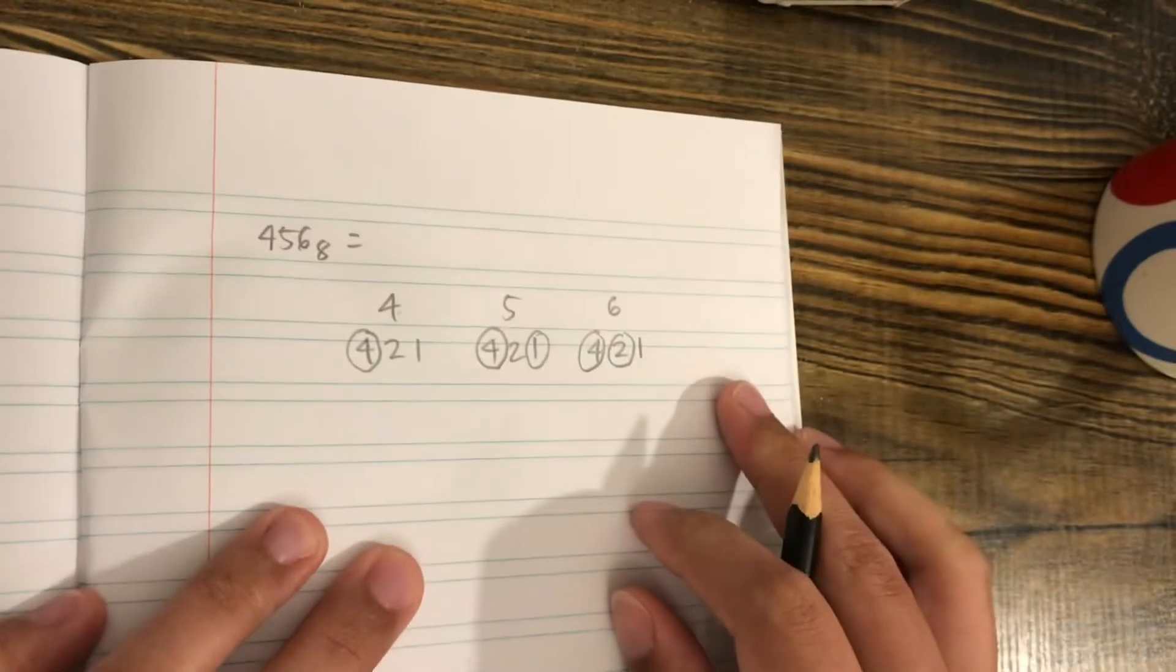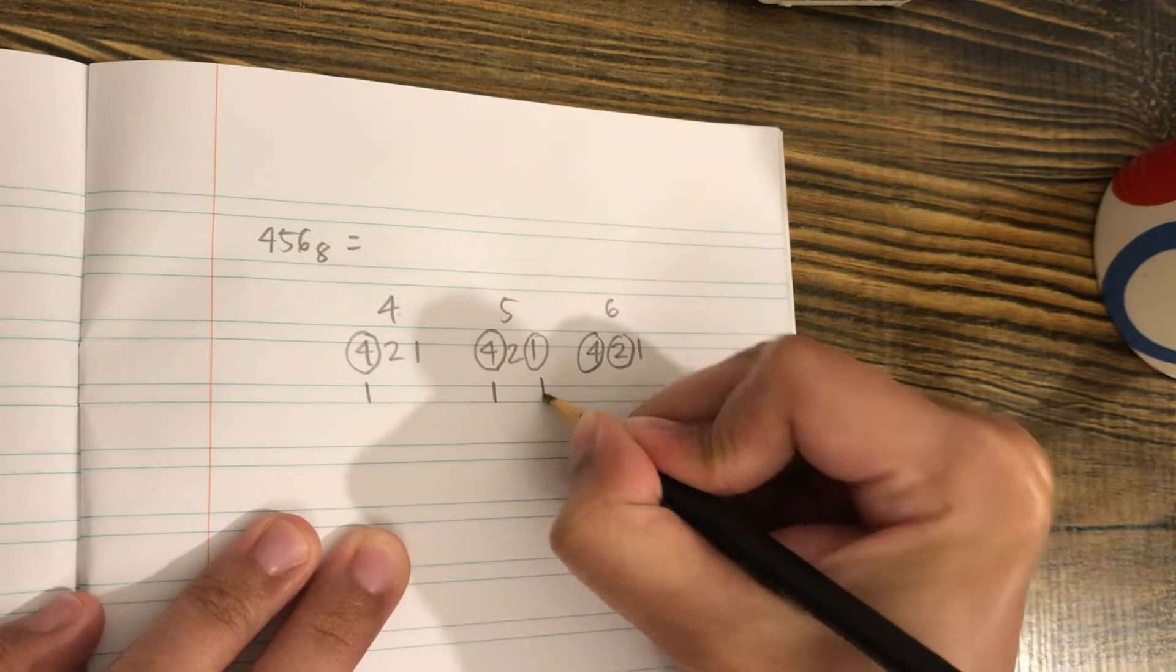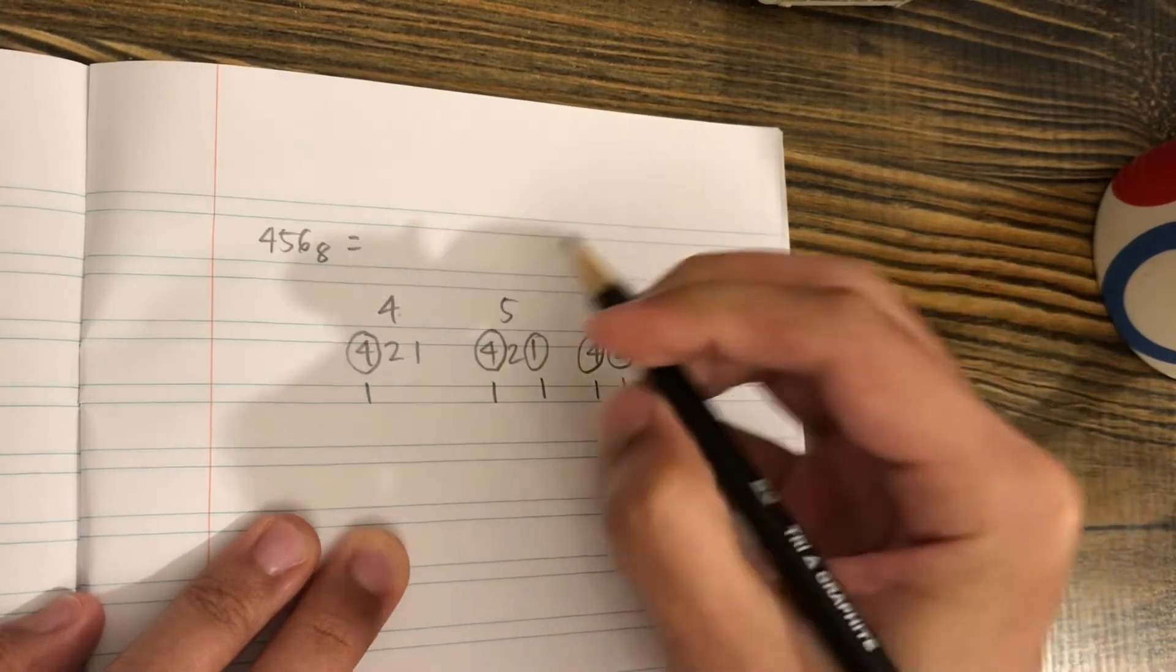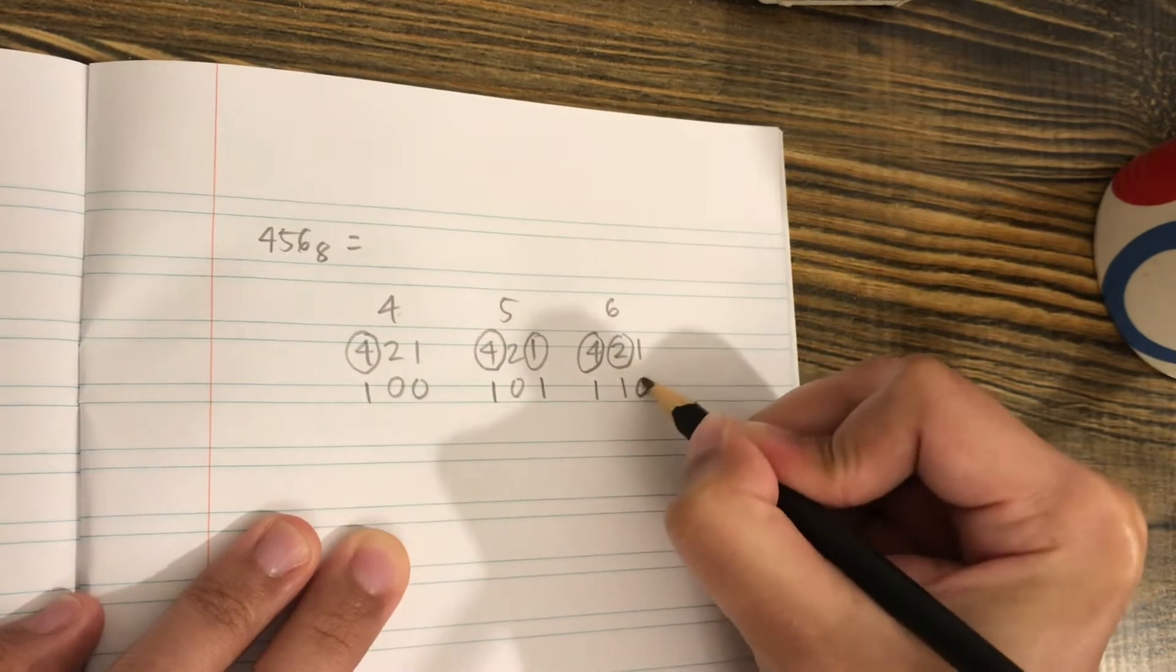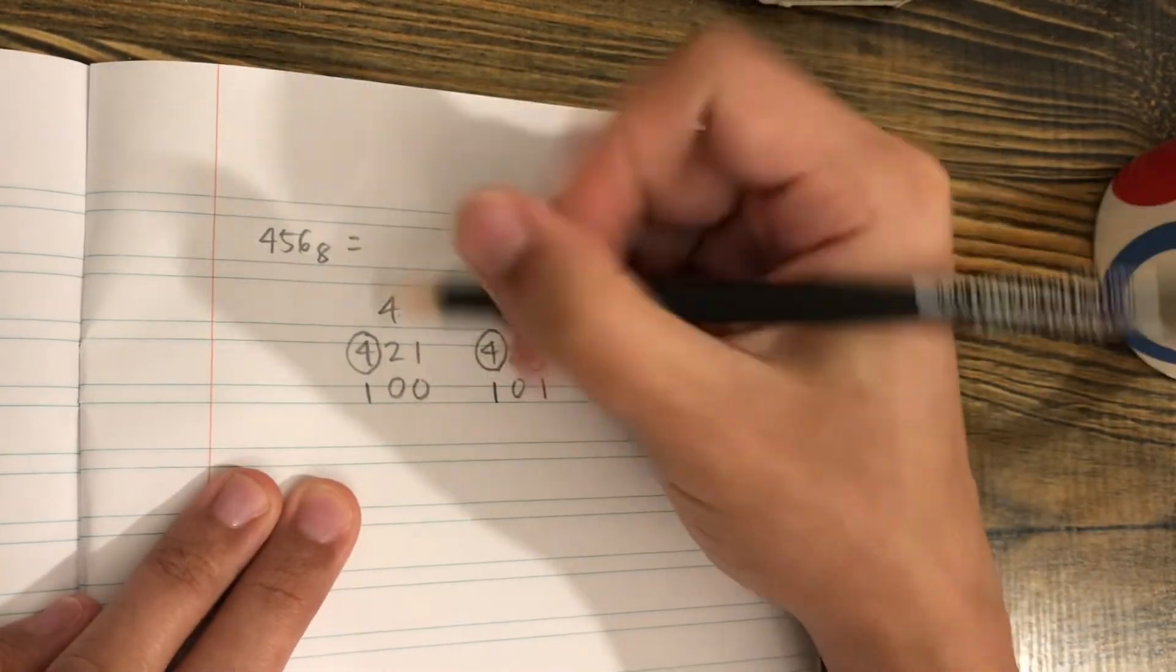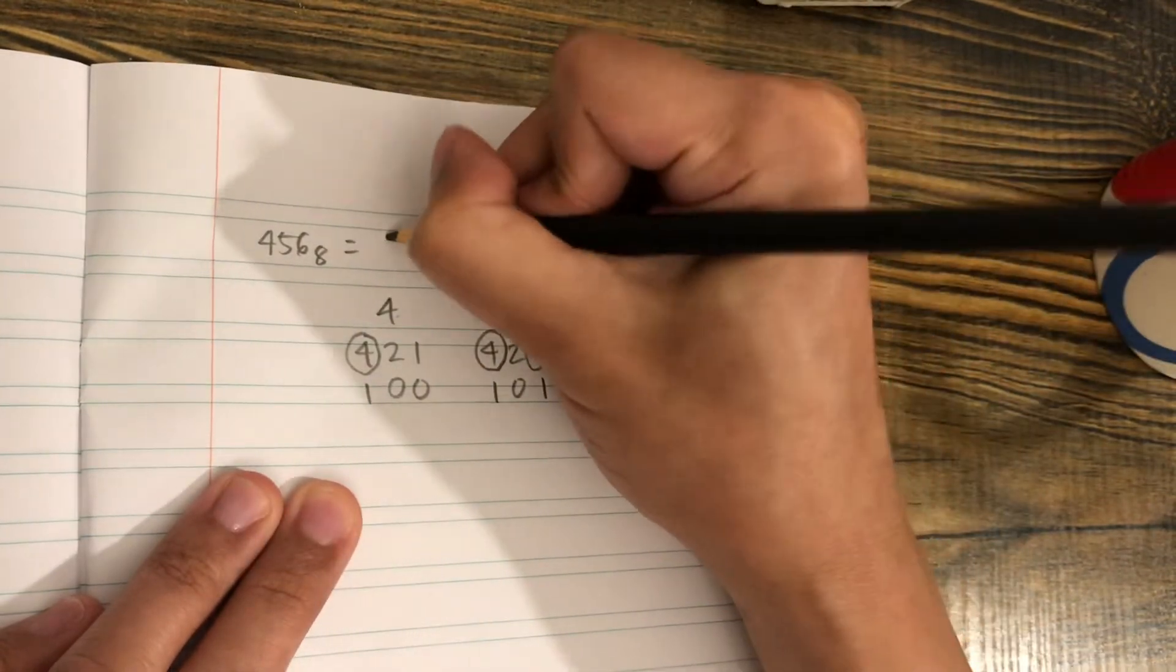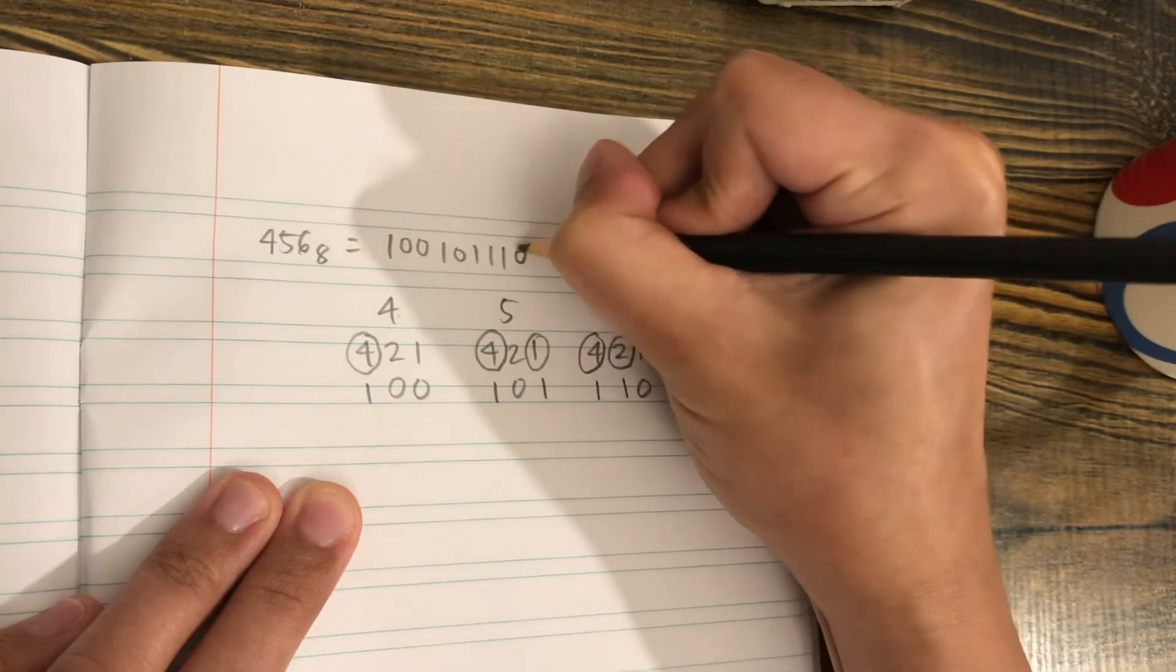We put 1 below the circled numbers and put zeros on the other numbers. This would be our final answer. We copy it from the left: 1, 0, 0; 1, 0, 1; 1, 1, 0.